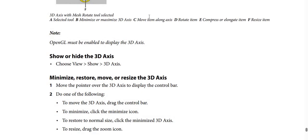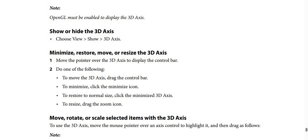Note: OpenGL must be enabled to display the 3D axis. To show or hide the 3D axis, choose View, then select Show, then select 3D Axis.